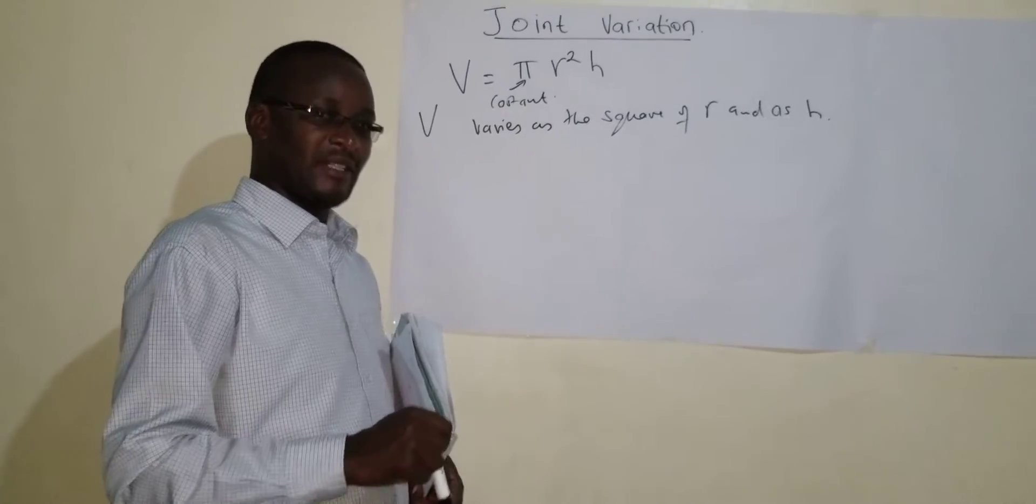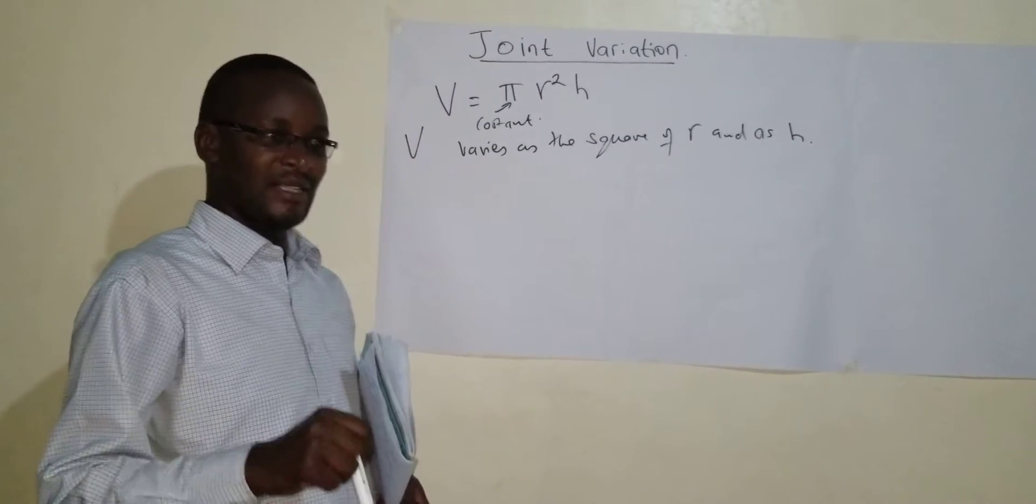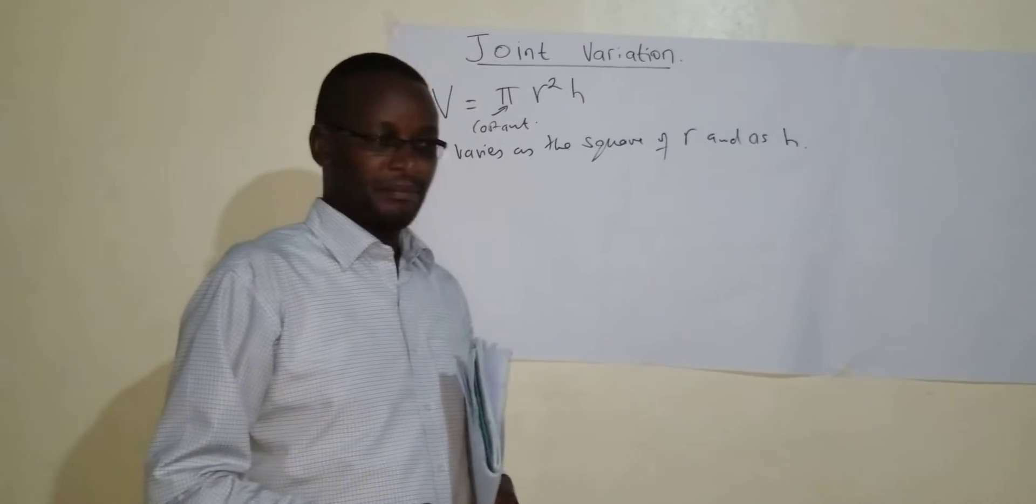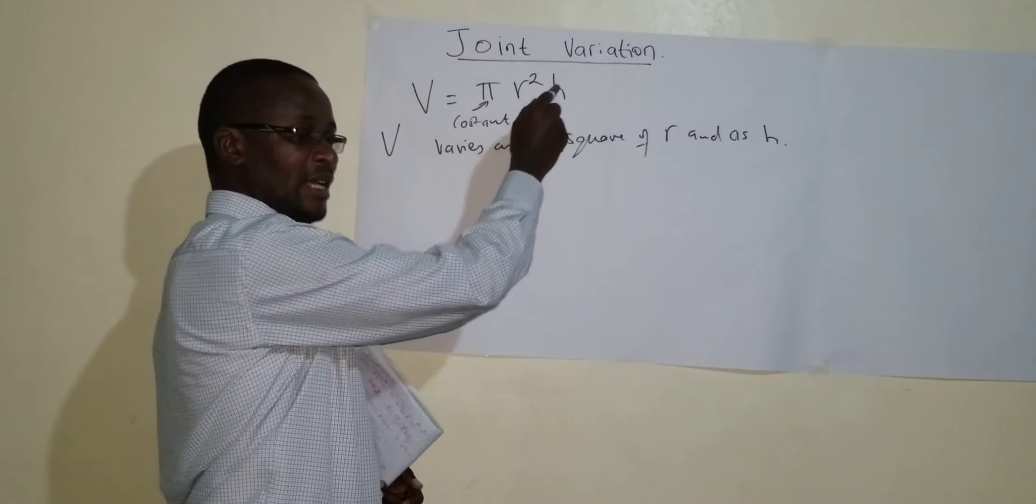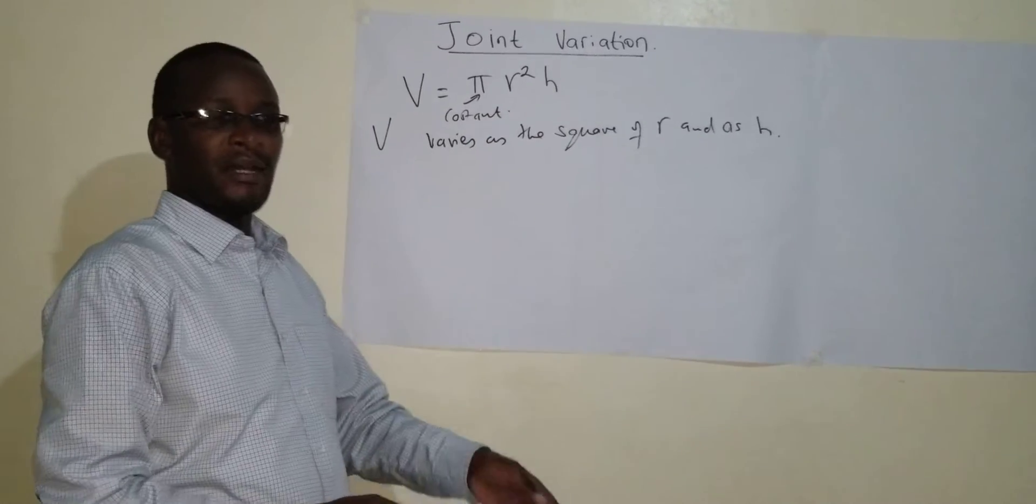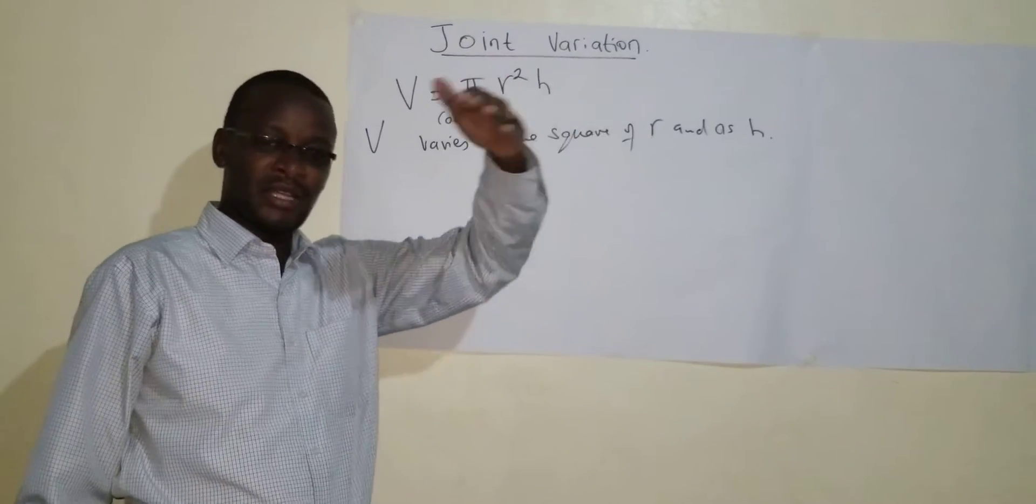For it to be inverse variation, the word inverse must be there. That is why you see that these two are not in the denominator. They are not in the reciprocal. Because you remember, for inverse, we were taking the variable in the denominator.